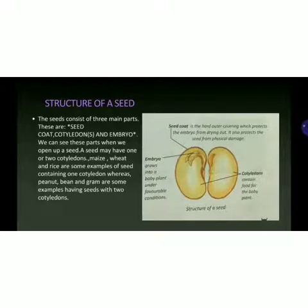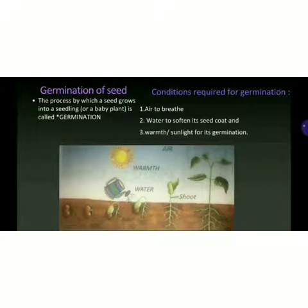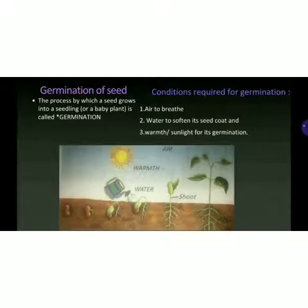Now there is a process involved in a plant growing. The process by which a seed grows into a seedling or a baby plant is called germination. As you can see in the picture, the seed is put into soil, then a small radicle comes out of it. A small plant is coming out and it grows and grows and grows, finally becoming a baby plant — a seedling growing into a baby plant.